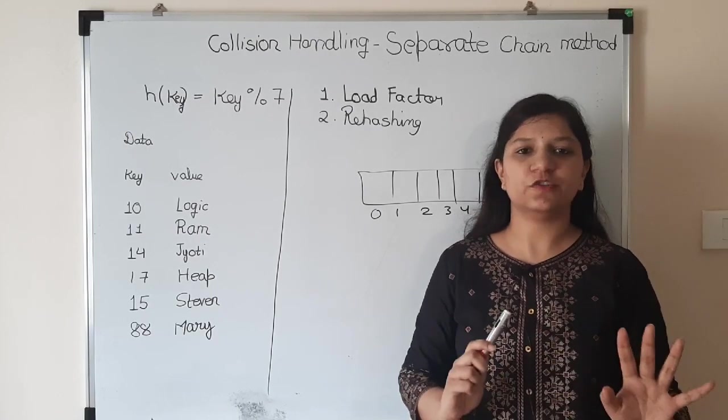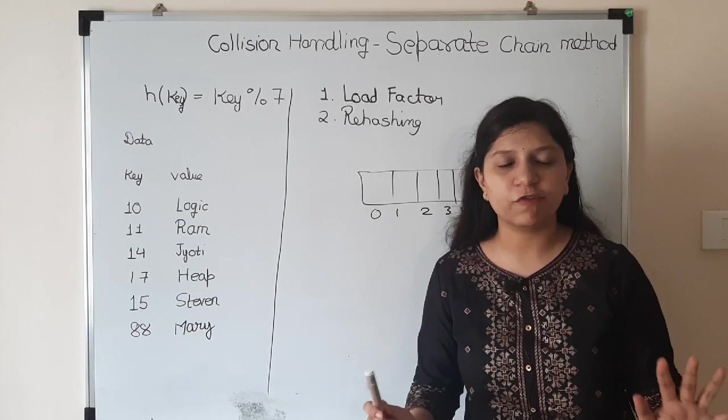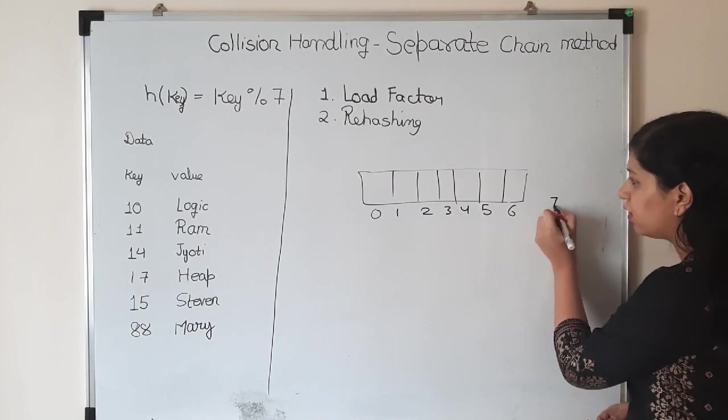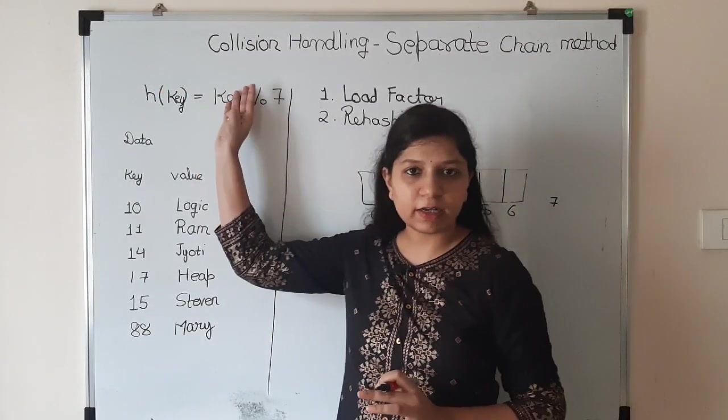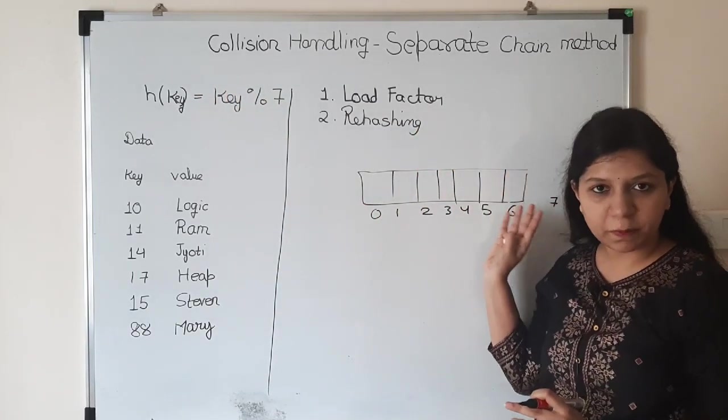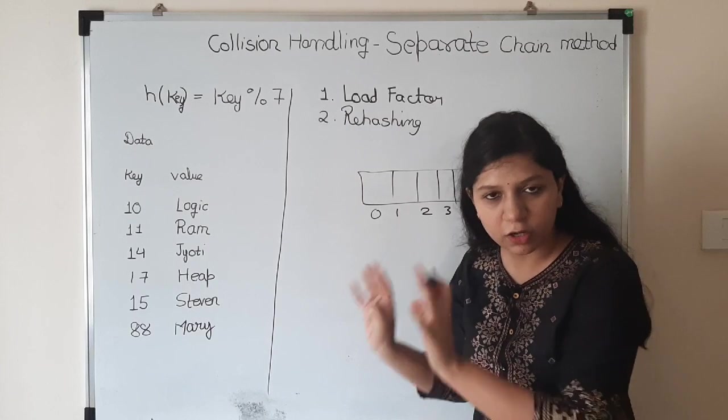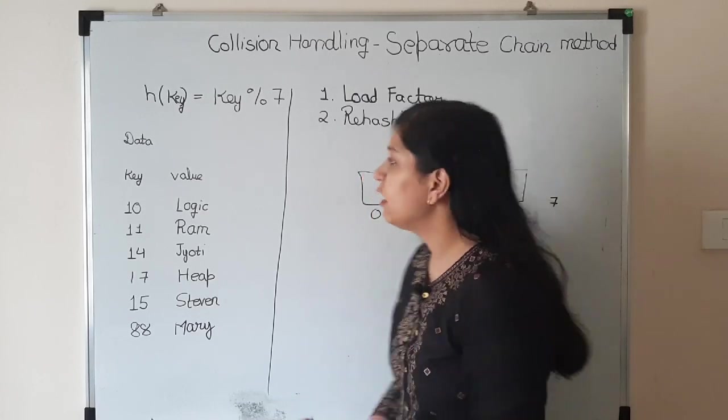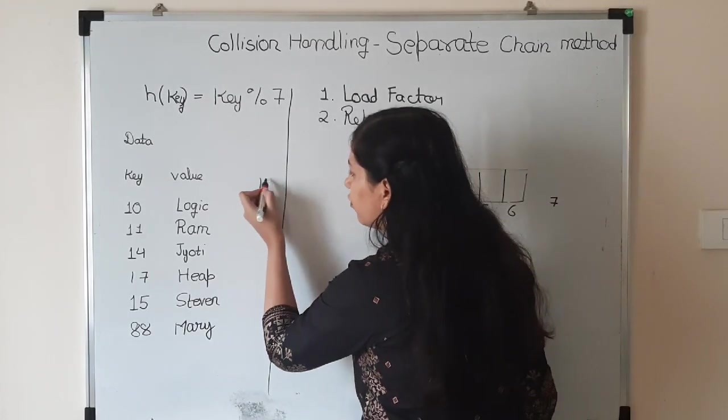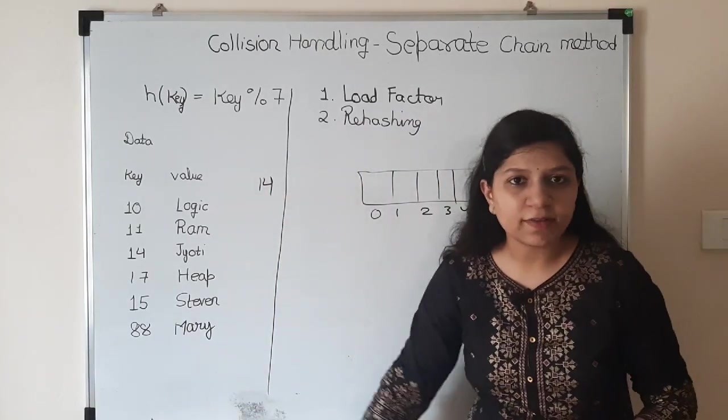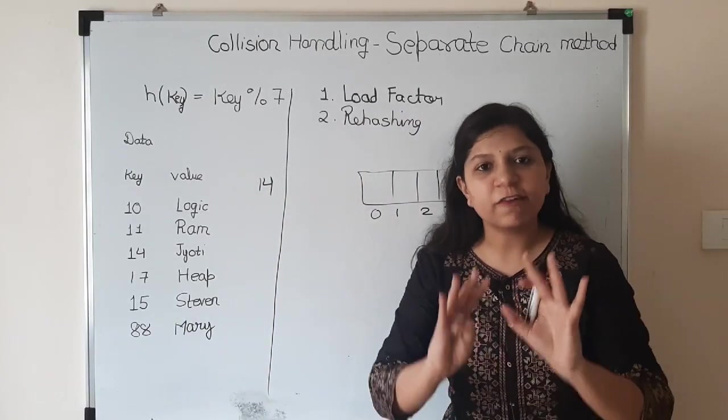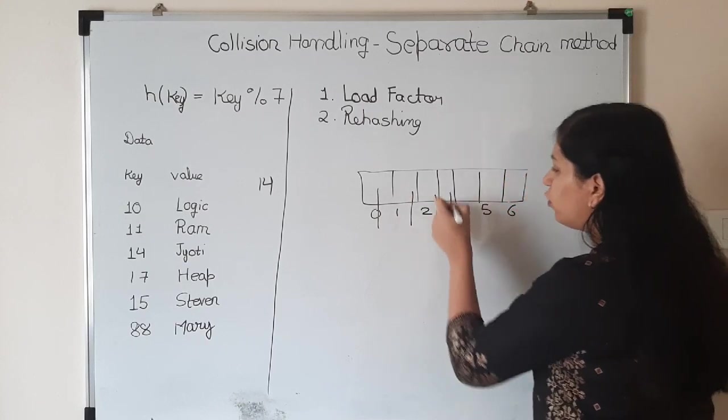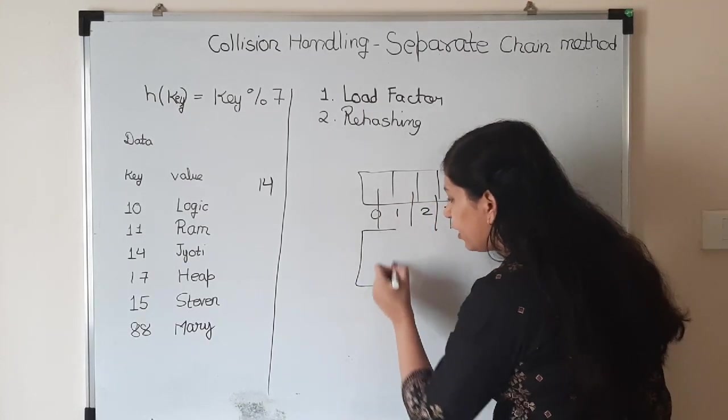In Separate Chain method, if there's a good hash function that distributes data uniformly - suppose here we were having seven places with key modulo 7 - we had seven possible places where we can insert our values. This input size currently is only six. Now let's say if we increase it to 14 values.